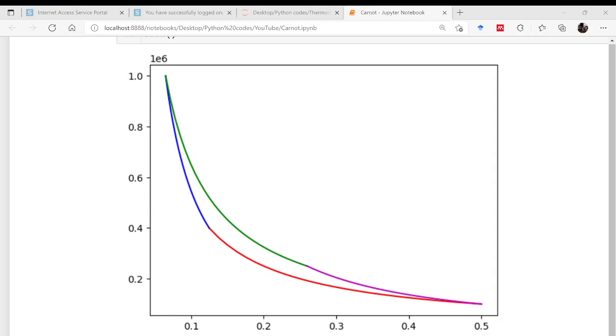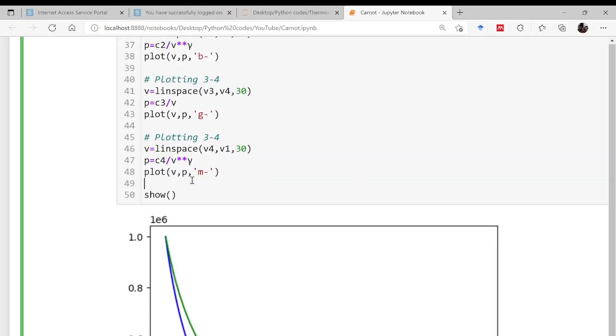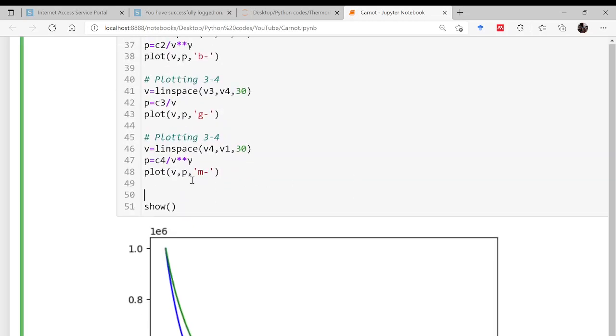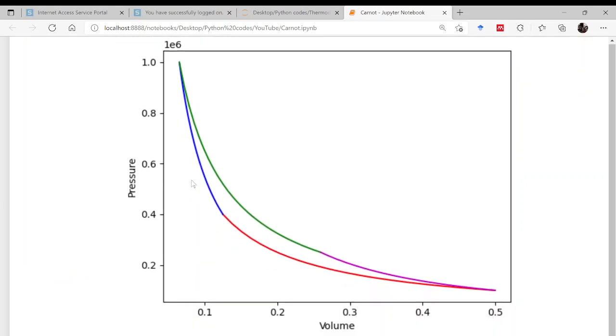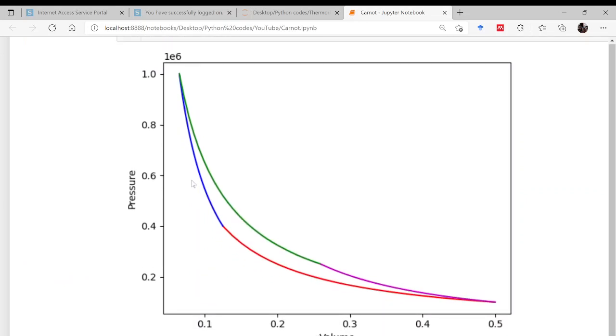So I hope now you know how to plot Carnot cycle within Python. So what you can do is you can also label, you can write here as the X label as volume and the Y label as the pressure. Done. So the X label is volume, Y label is pressure. Now the cycle is with you.